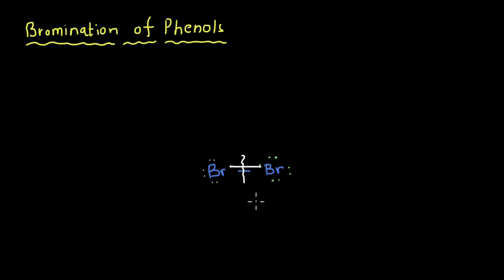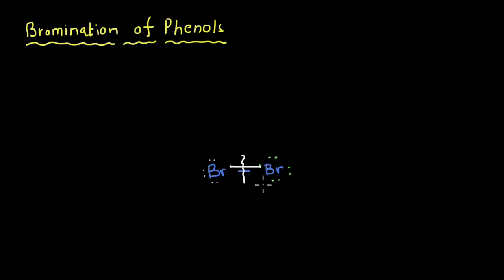When bromination is performed, we usually don't add bromine directly to whatever we want to react it with. Typically, bromine is a liquid, so we'll add a small amount of bromine to a solvent and then use this solution for our reaction. In this case, we are going to be using bromine water — we'll add a small amount of bromine to water and use that solution for our bromination.